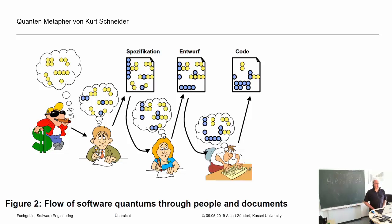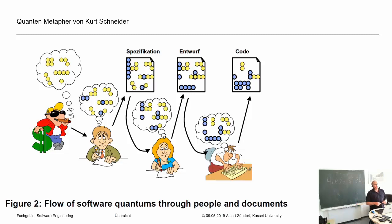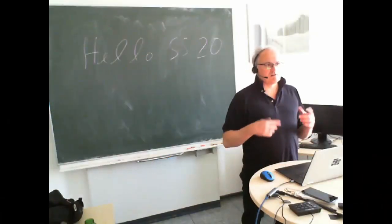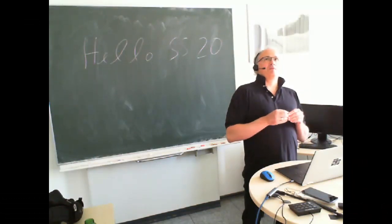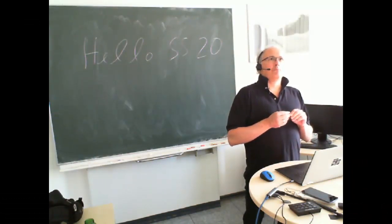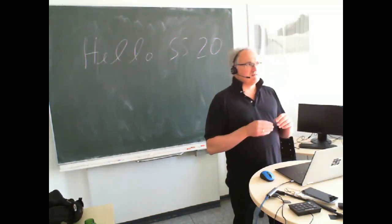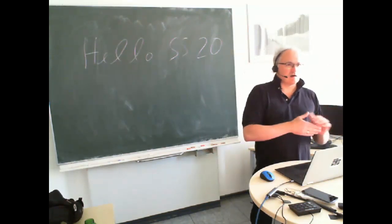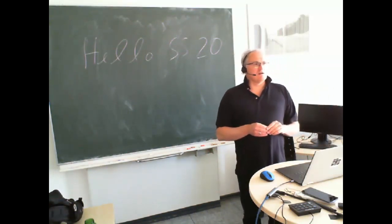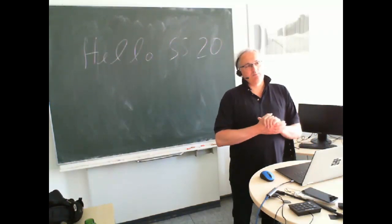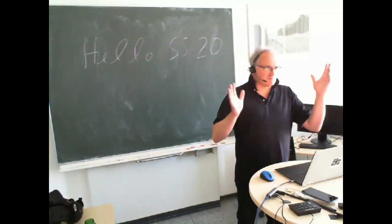Wir haben 30, 40 Leute, die sitzen da über der alten Post in Richtung Hauptbahnhof. Was mich bei der Vorbereitung der heutigen Vorlesung lange beschäftigt hat, war: wie ziehe ich das auf? Der eigentliche Punkt, über den man jetzt sprechen muss, ist — wir hatten bis zu den Nullerjahren, bis im letzten Jahrtausend, die klassische Software Engineering, die dann im Unified Process begipfelt hat.